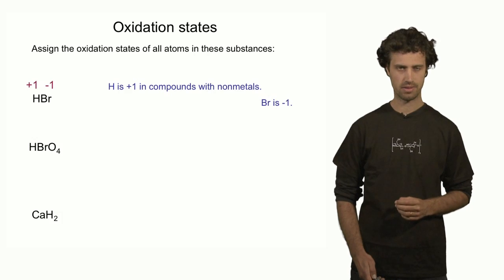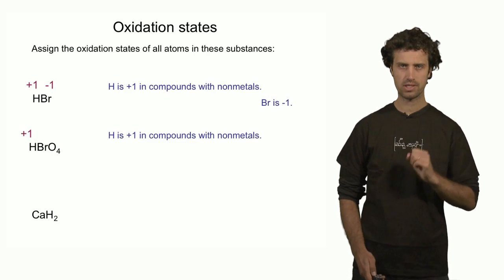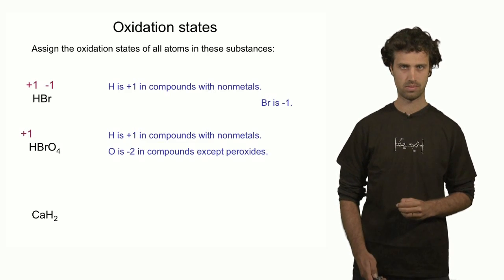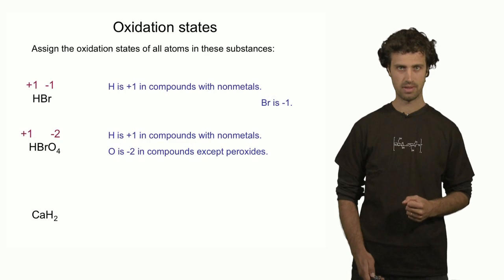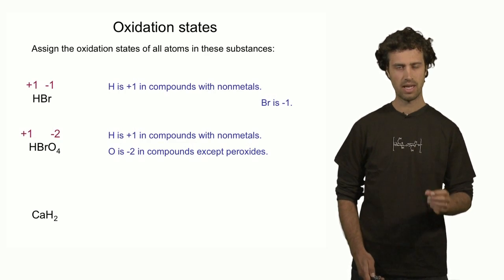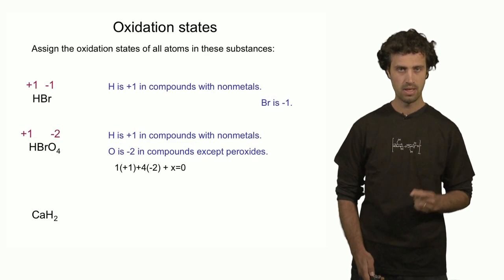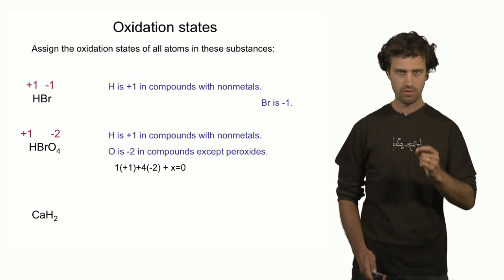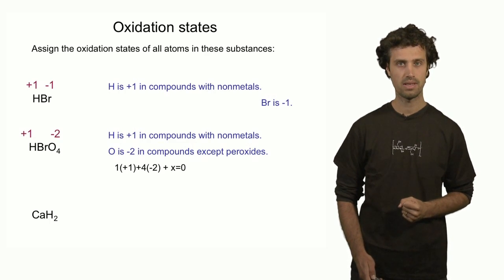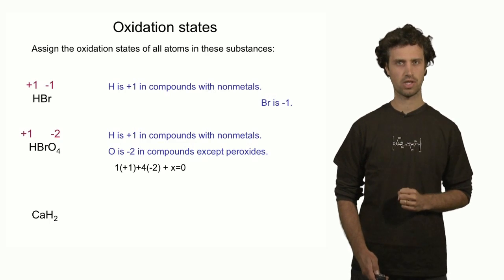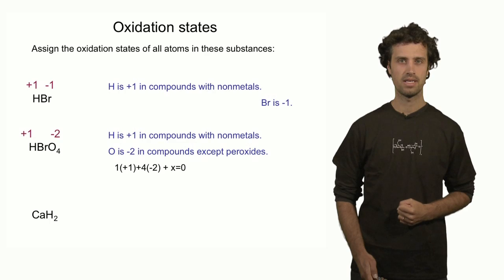Next up is perbromic acid. The oxidation state of the hydrogen is plus one. We also know that the oxidation state of the oxygen atoms must be minus two. To find the oxidation state of the remaining atom, bromine, we apply the same trick as before. We add up the oxidation states of all the atoms and solve for the unknown. We can set up the following equation: one times plus one for the hydrogen, plus four times minus two for the oxygens, plus the oxidation state of bromine, must equal zero. Solving for this unknown, we find that the oxidation state of bromine equals plus seven.